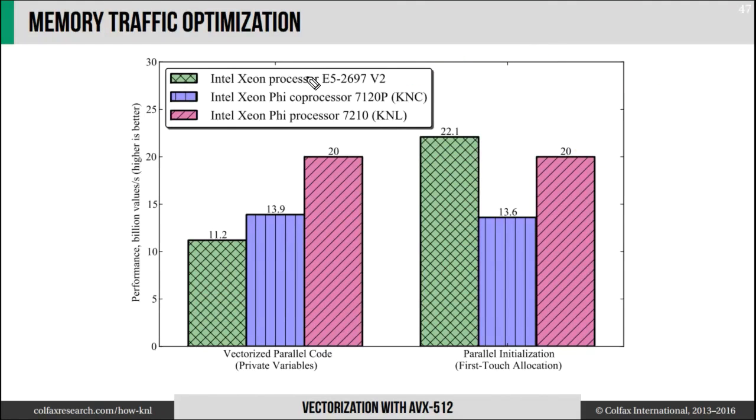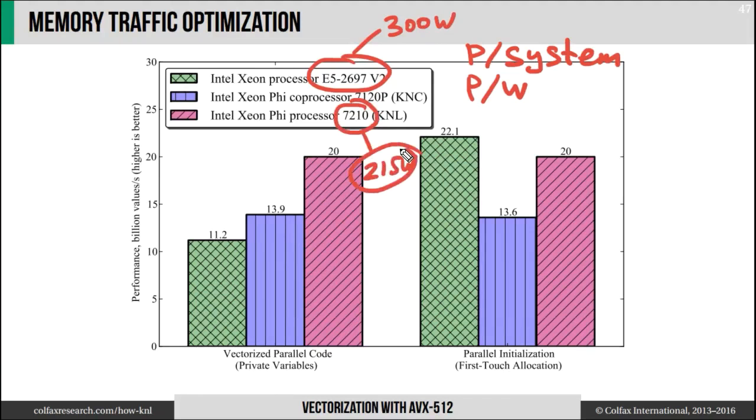What I'm showing here is the performance per system - per physical system. But some other important metrics could be performance per watt if you're running a data center. Because if you look at the specifications, the thermal design power of the CPU is around 300 watts, whereas the thermal design power of the Xeon Phi processor is around 215 watts. So I do 10% less work for 30% less power. Another metric of performance that could be important is performance to cost ratio, and I am not in the position to provide the up-to-date information about costs in a recorded video, but this is something that you can definitely research on your own.